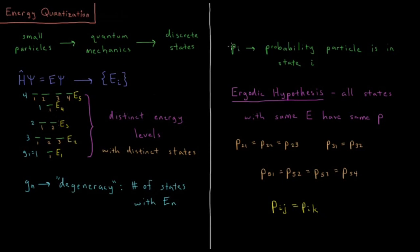So that brings us to probability, P sub i. That's the probability that the particle is in state i. So how do we get the probabilities of these given states? The first thing that we'll bring up is called the ergodic hypothesis.